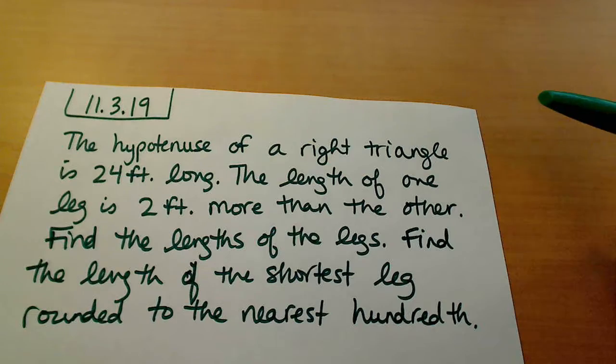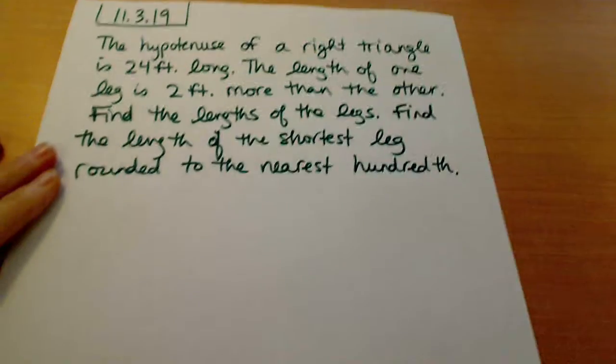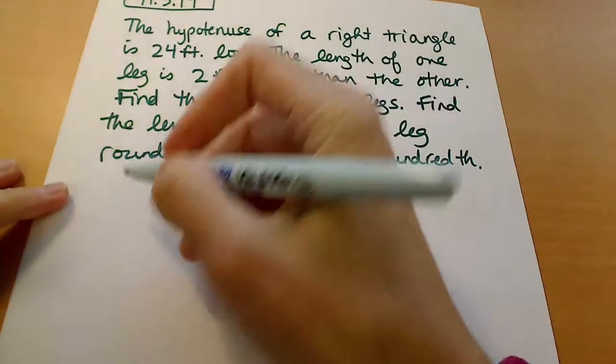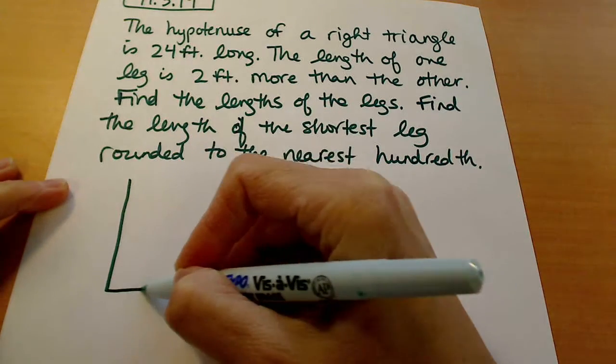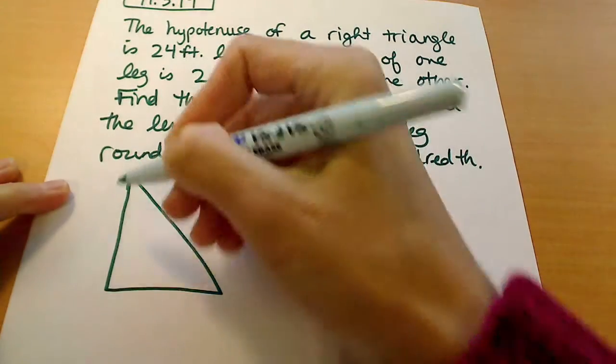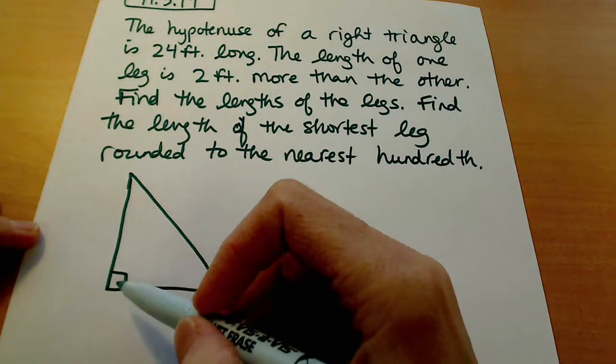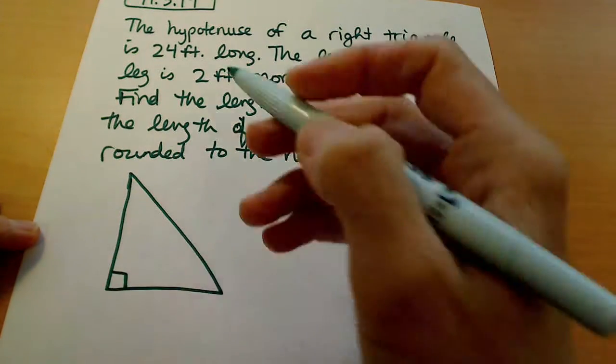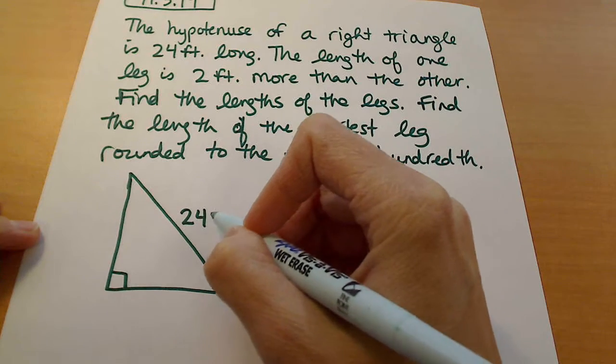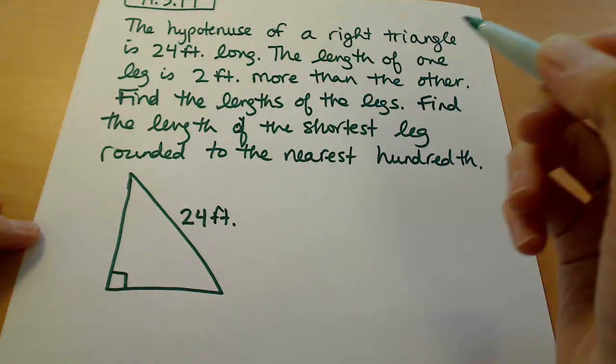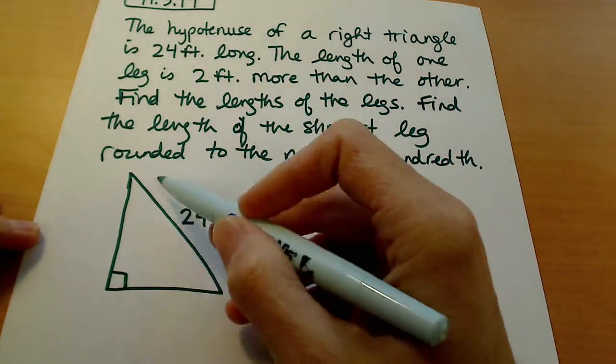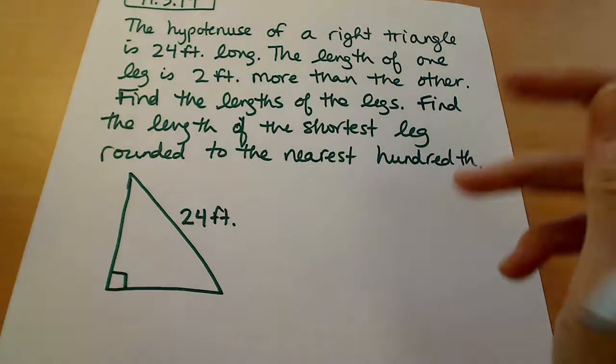The first thing we need to do is actually draw ourselves a picture so we can see what this is looking like. They tell us it's a right triangle and give us the value of the hypotenuse. Remember the hypotenuse is always the side directly across from the right angle, so that would be this side right here in the picture.